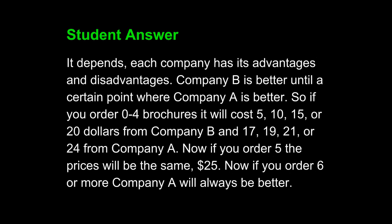It depends. Each company has its advantages and disadvantages. Company B is better until a certain point where Company A is better. So, if you order zero to four brochures, it will cost $5, $10, $15, or $20 from Company B, and $17, $19, $21, or $24 from Company A. Now, if you order five, the prices will be the same, $25. Now, if you order six or more, Company A will always be better.